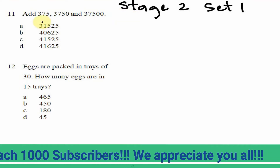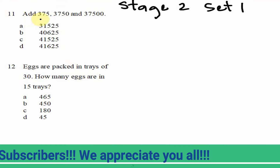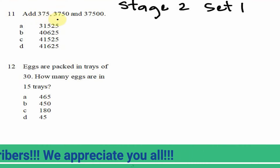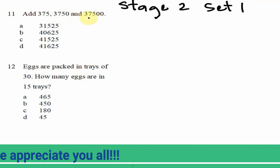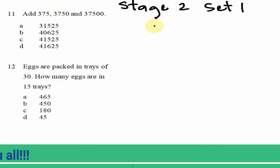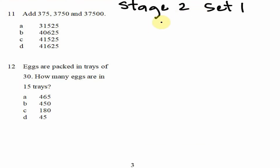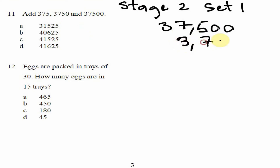Let's get right into it. Question 11 requires us to add 375, along with 3750 and 37500. Remember, City and Guilds does not allow the use of a calculator, so all workings have to be done without one. We're going to add these numbers: 37500, 3750, and 375.